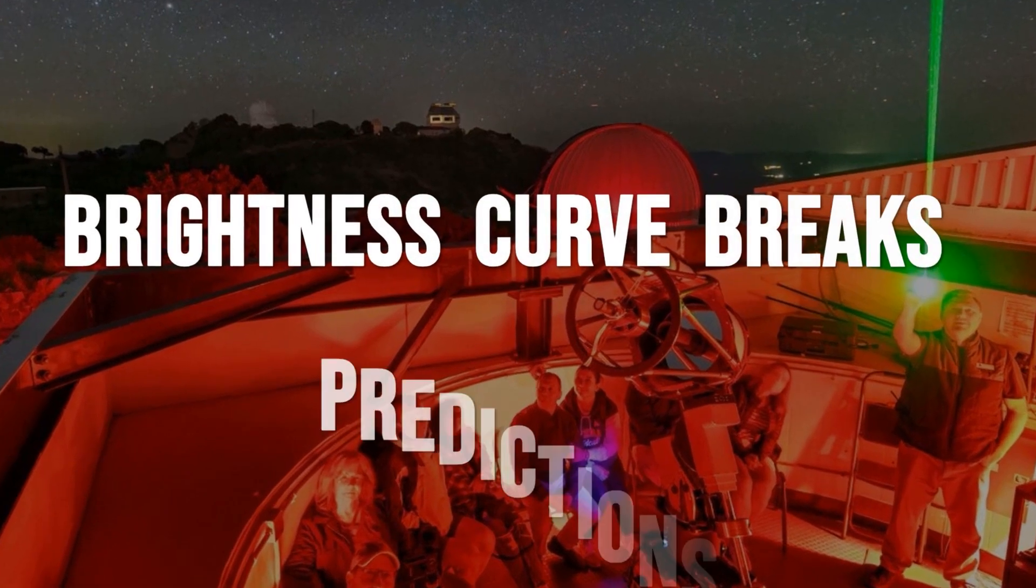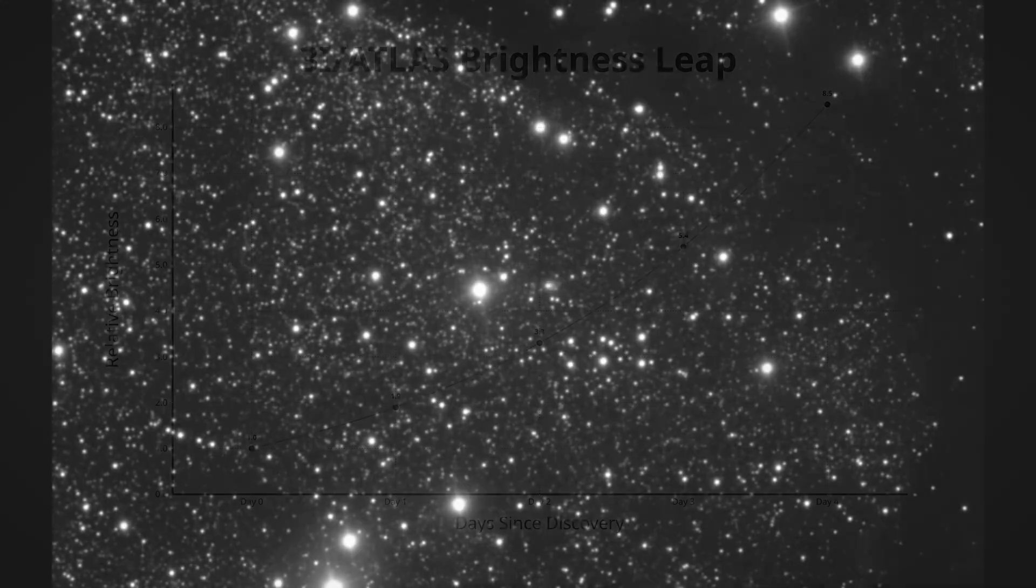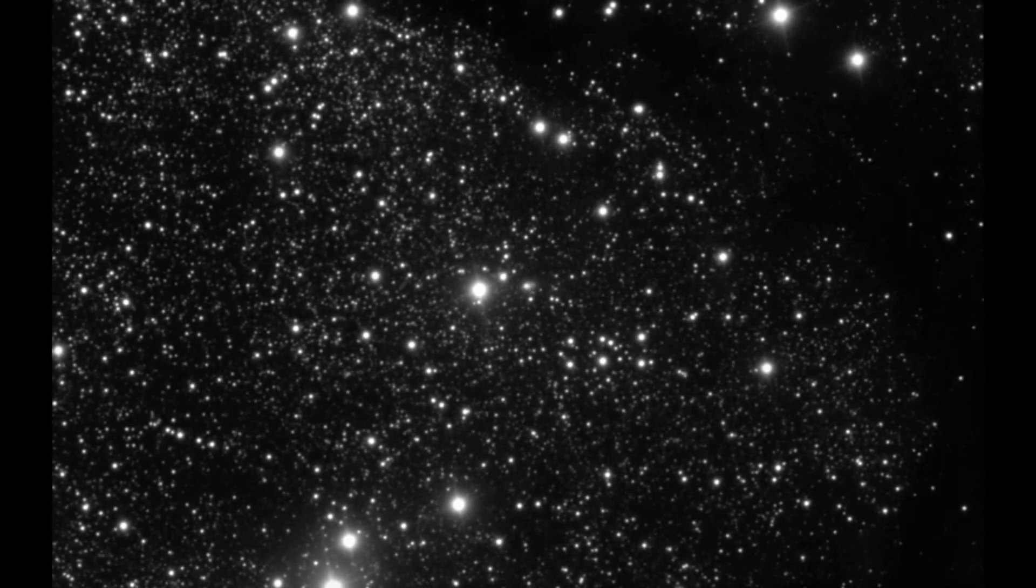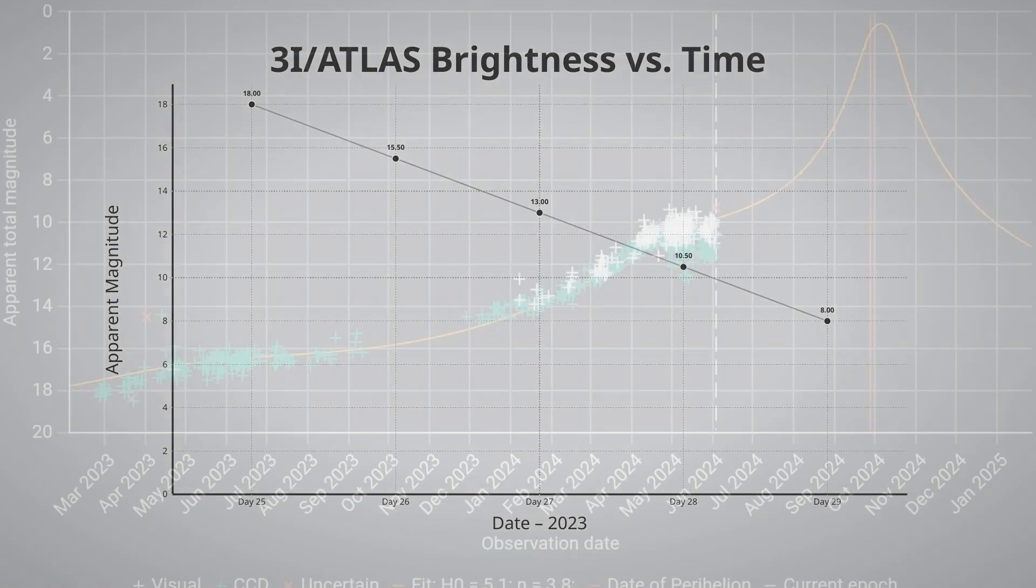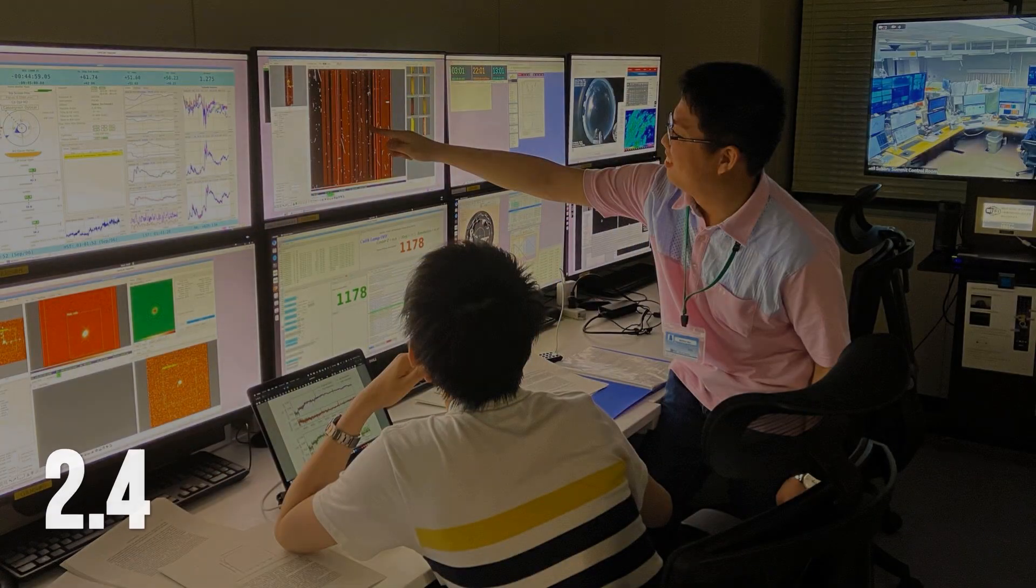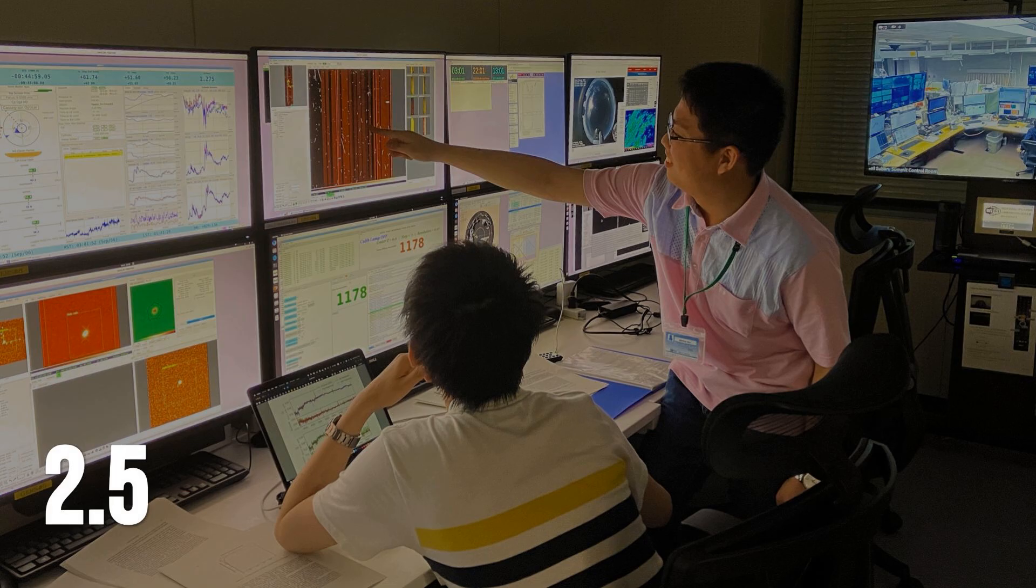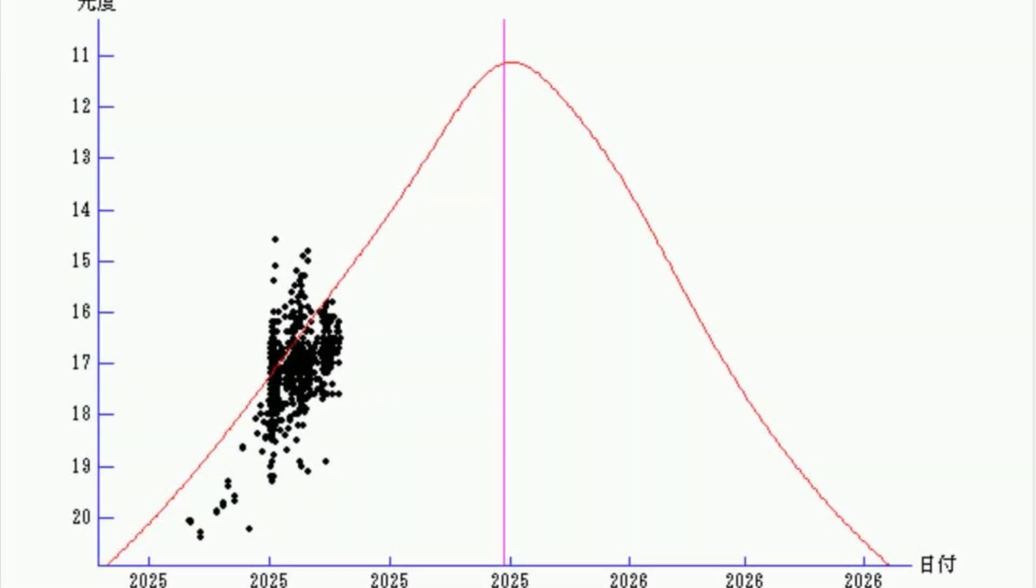Within weeks of discovery, global observers noticed something off. Instead of following the gentle, predictable rise in brightness that astronomers mapped out from day one, 3I/Atlas started to leap ahead. By mid-September, its apparent magnitude had hit 12, a full step brighter than models predicted for this distance from the sun. That's not a subtle shift. In cometary terms, a one-magnitude jump means more than doubling in brightness, and here the change happened almost overnight. Between September 7th and 15th, the COBS database and amateur logs worldwide recorded a sudden spike, with green dots on the light curve chart veering away from every theoretical line.